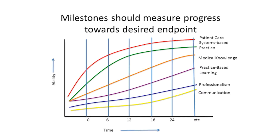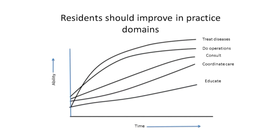The other part was that this was a way to get into competence-based training as opposed to time-based — if you met your milestones, you could progress faster than normally, and if you didn't, it might take longer. When a group was put together to develop milestones for general surgery, it was really hard to get your head around what the milestones should be for all surgery residents across all competencies. So instead, they tried to work with practice domains — things like what a surgeon does: treats diseases, does operations, does consults, coordinates care, educates. They came up with nine such things.